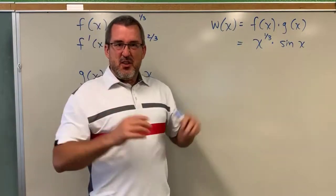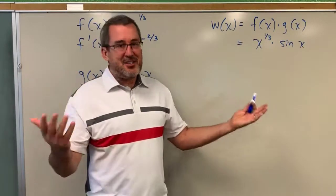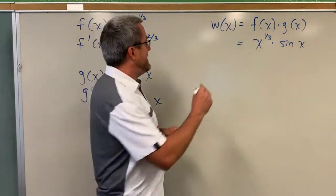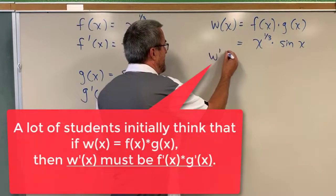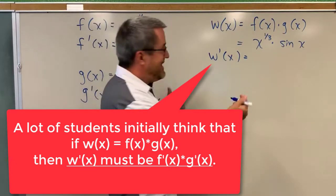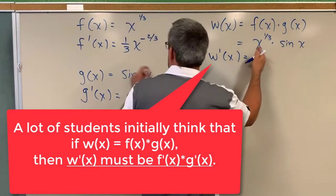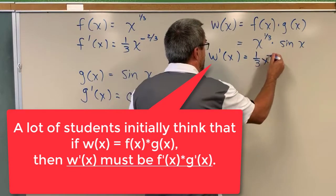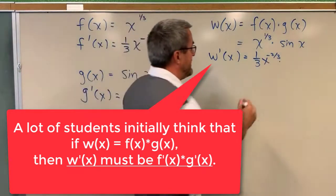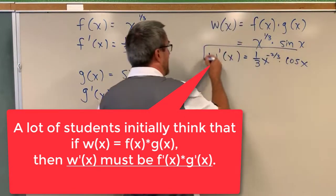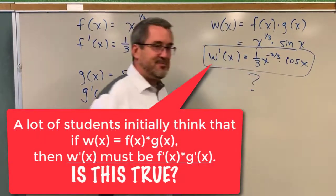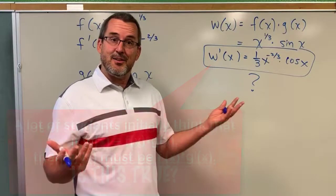A lot of people in their first interaction with this, if they haven't been instructed about taking the derivative of a product of two functions, think the derivative is just the product of the two individual derivatives — that is, the derivative of x to the one-third, which was one-third x to the negative two-thirds, gets multiplied by the derivative of sine of x, which is cosine of x. What we'd like to consider today is: is this true? And if so, why? And if not, why?